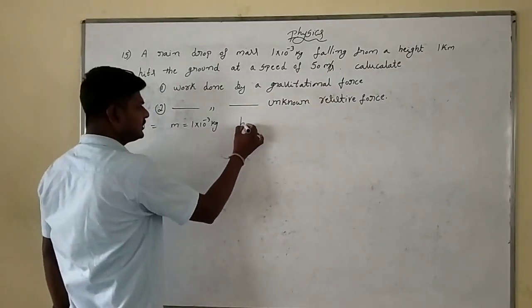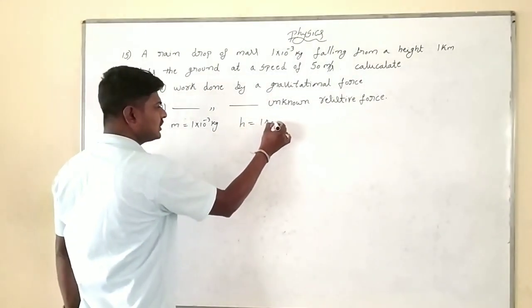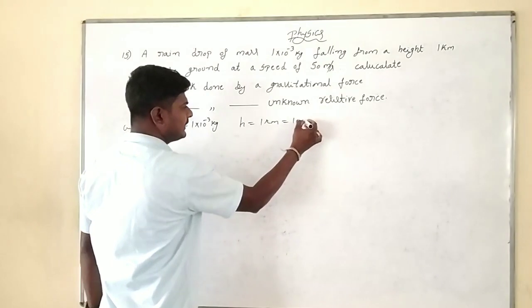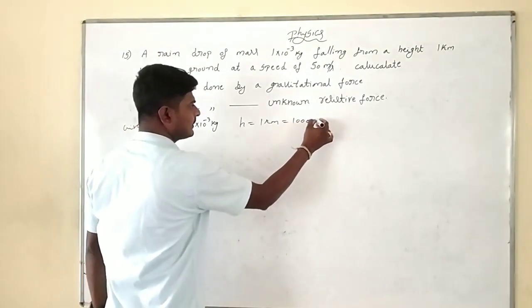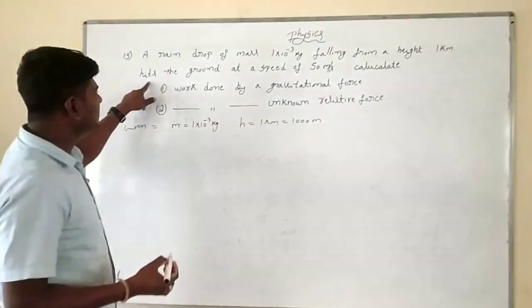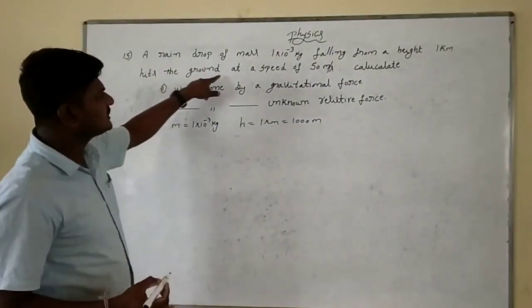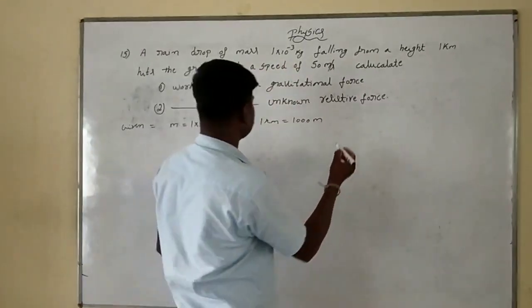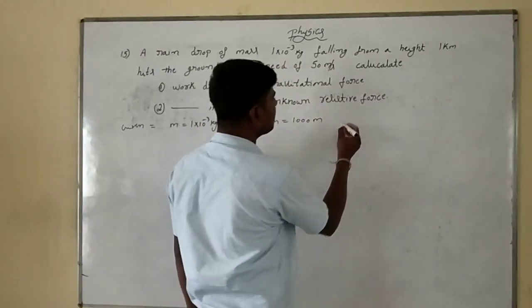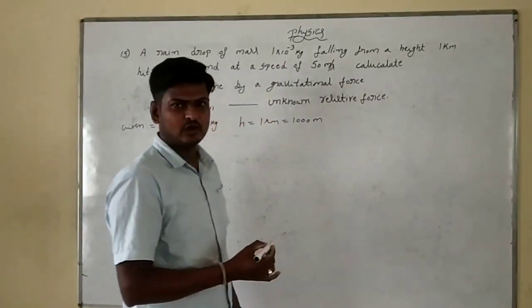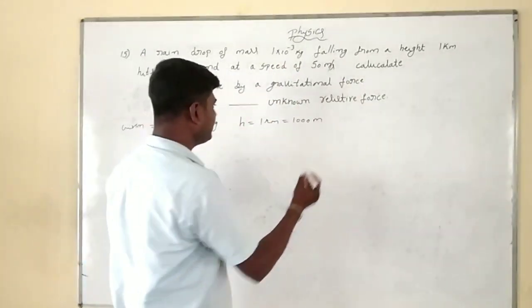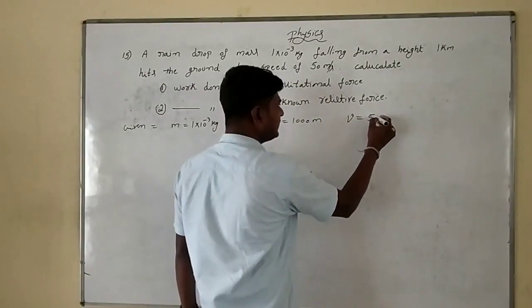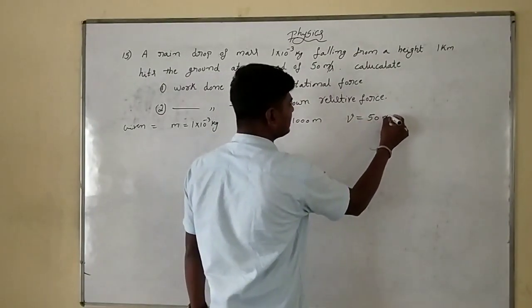1 kilometer is how much? 1000 meters. It hits the ground with a speed of 50 meters per second. So the final speed v is 50 meters per second.